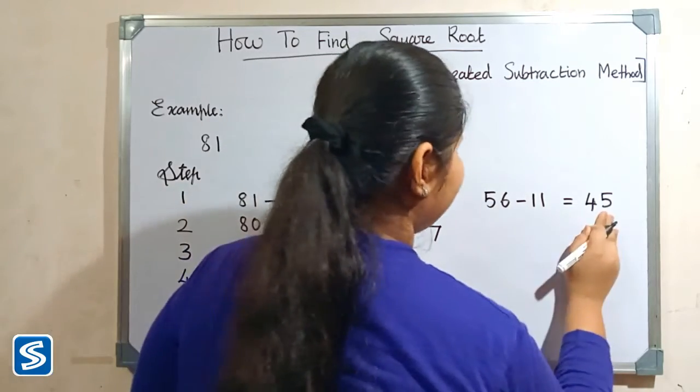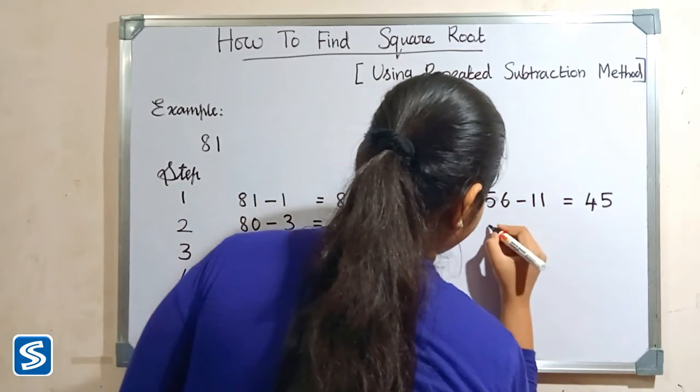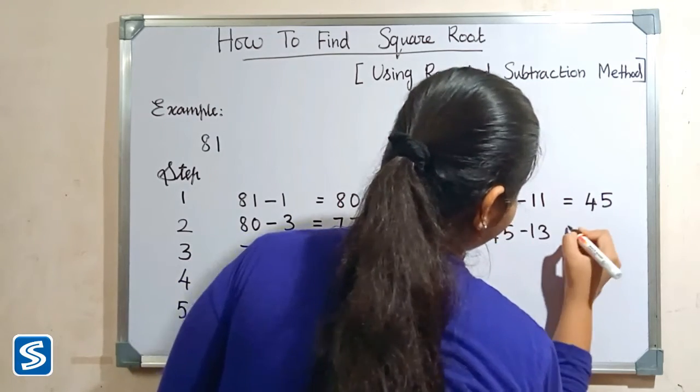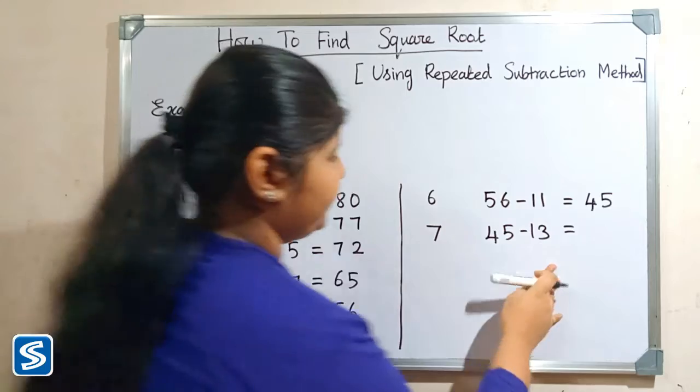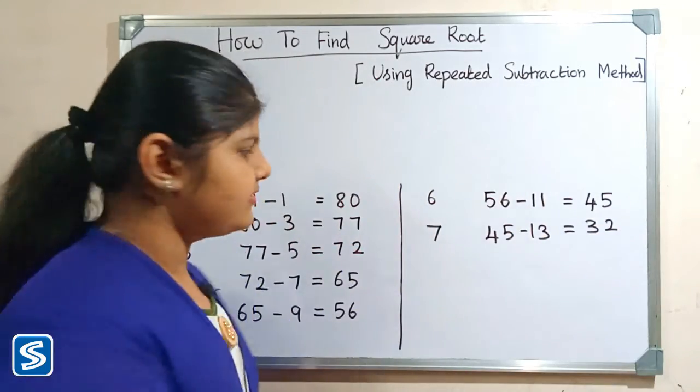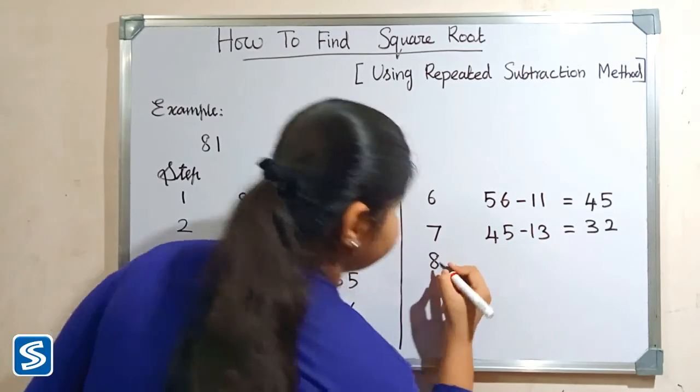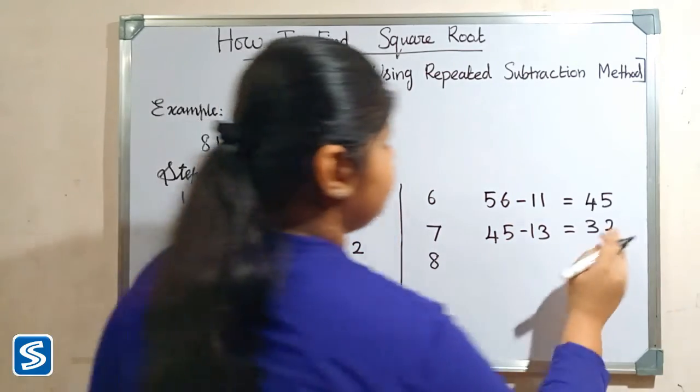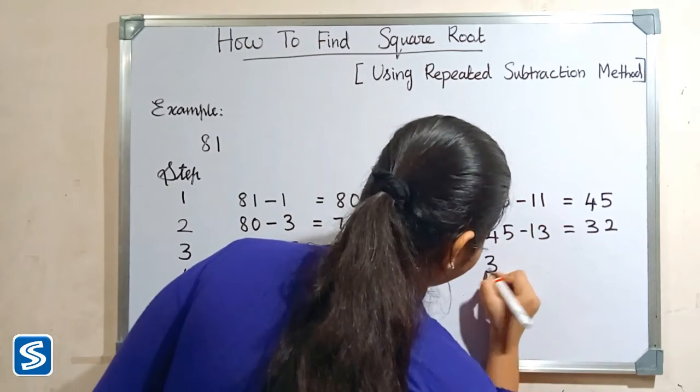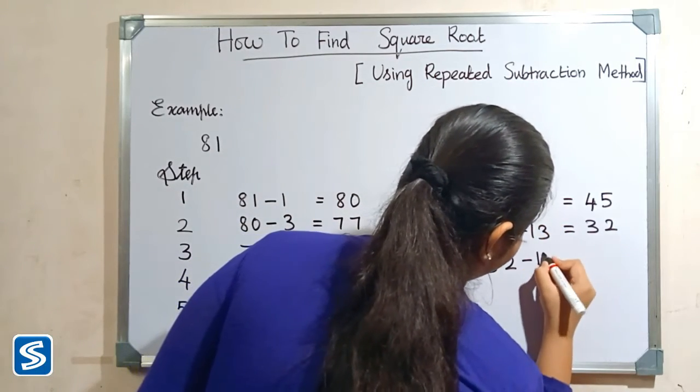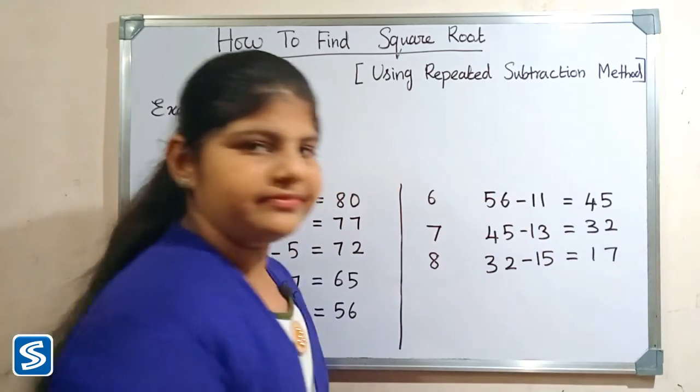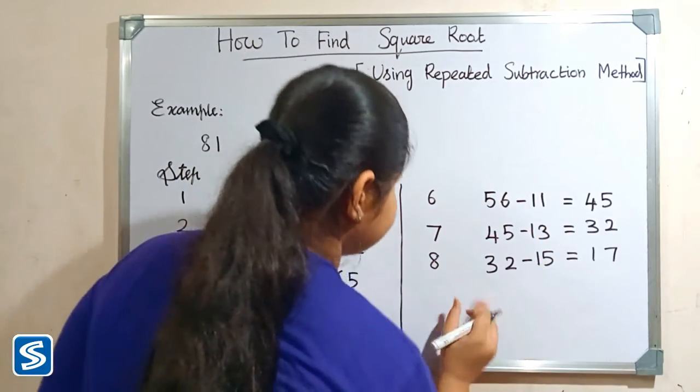Step 7: Subtract 13 from 45, so 45 minus 13 will be 32. Step 8: Subtract 15 from 32. 32 minus 15 will be 17.